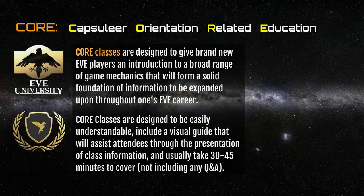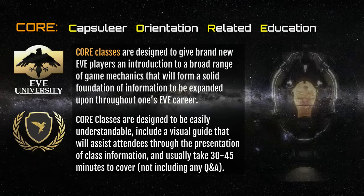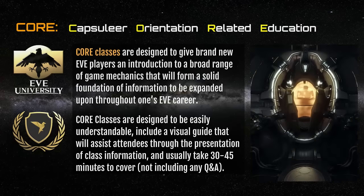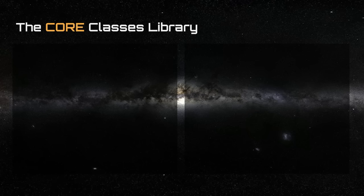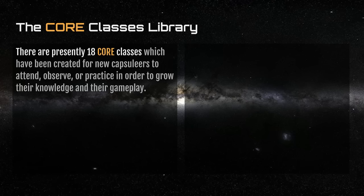The CORE classes are designed to be easily understandable, and this visual guide is designed to help you through the presentation. This should take about 30 minutes, the focus being to make you a better Capsuleer. The CORE classes library includes 18 classes, which have been designed to help you attend class, observe, and practice the skills in order to improve your gameplay.